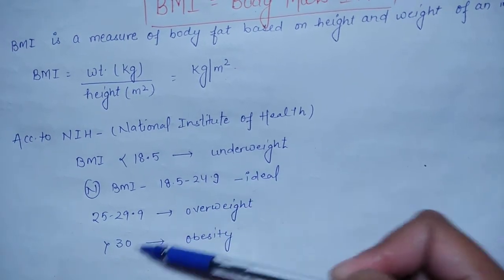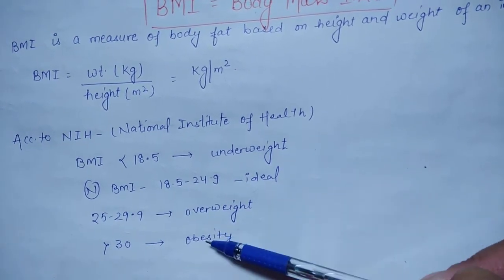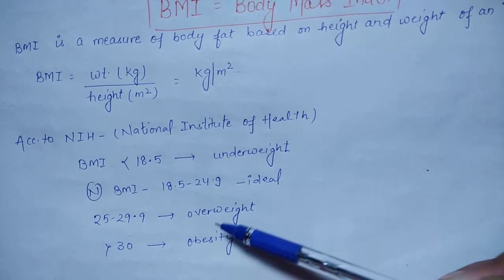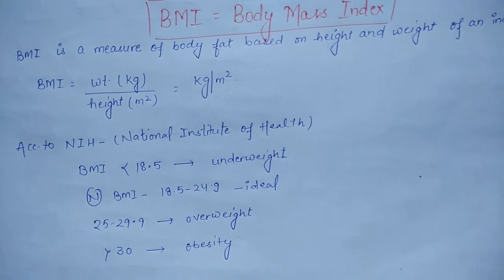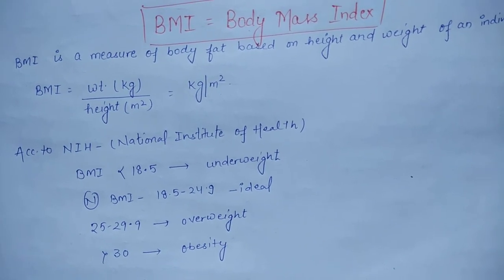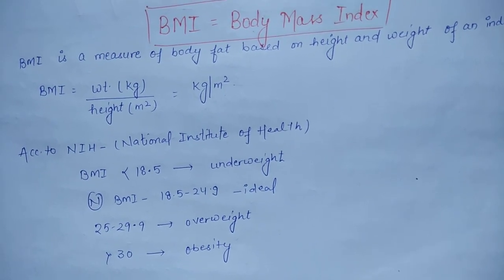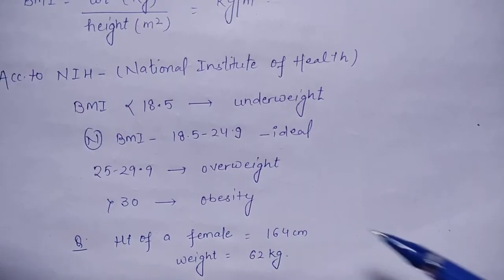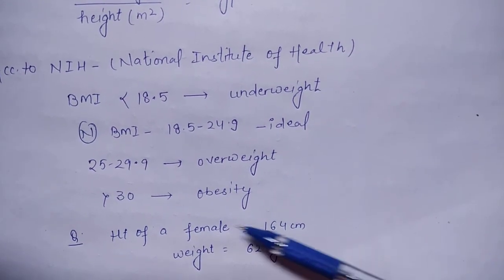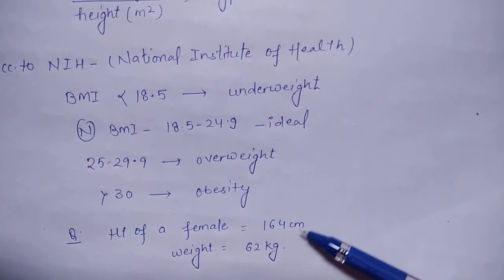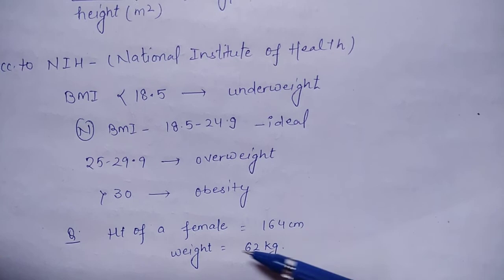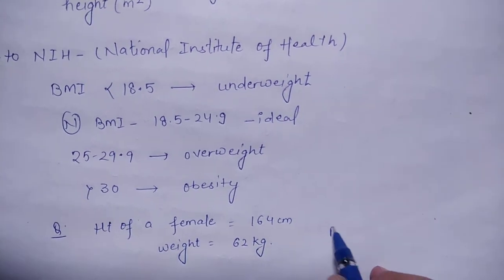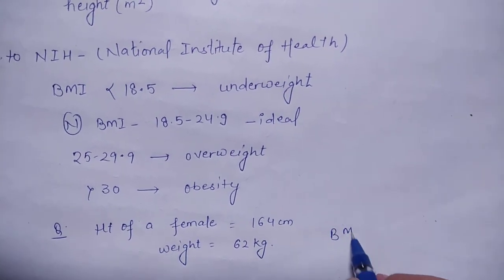If BMI is more than 30, the person is representing obesity. So this was related to the formula of BMI. Now a question for you: the height of a female is 164 cm and weight is 62 kg — calculate the BMI.